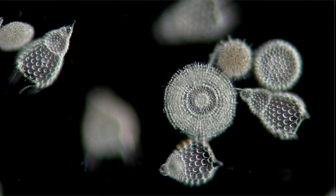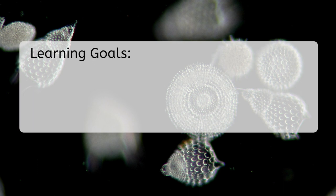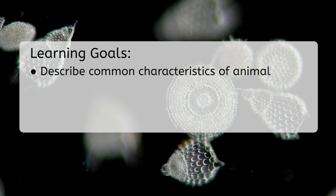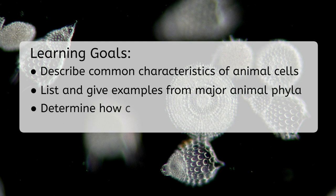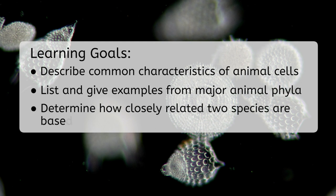Before we get started with today's lesson, let's look at our goals. By the end, you'll be able to describe common characteristics of animal cells, list and give examples from major animal phyla, and determine how closely related two species are based on their taxonomy.